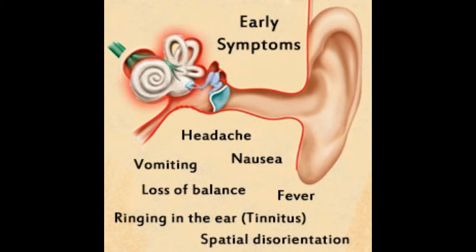Our inner ear consists of a system of canals and fluid-filled tube-like structures called the labyrinth. It is the labyrinth that performs the function of sending signals to our brain to understand sound and to figure out vertical directions. When we say that a person is suffering from an inner ear infection, it is this labyrinth that gets infected.